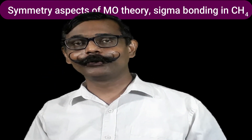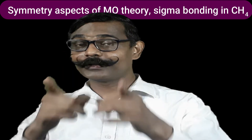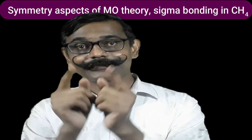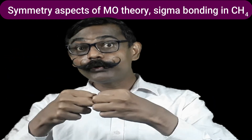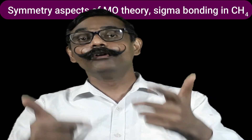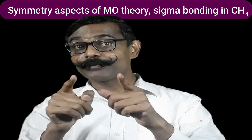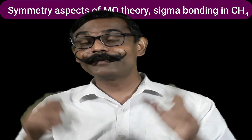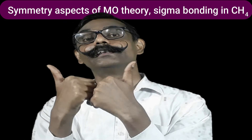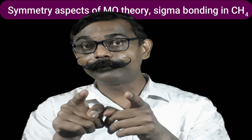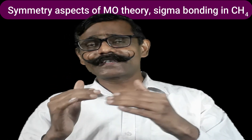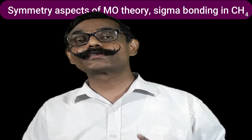Let us understand the formation of the water molecule with the help of the LCAO principle. The peripheral atoms — hydrogen — form a group. The symmetry of that group can be obtained from the reducible representation. After reduction, we get irreducible representations, which represent the symmetry of those LCAOs. Those LCAOs combine with the respective orbitals of the central atom, provided they have the same symmetry.